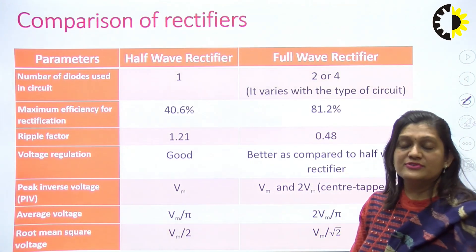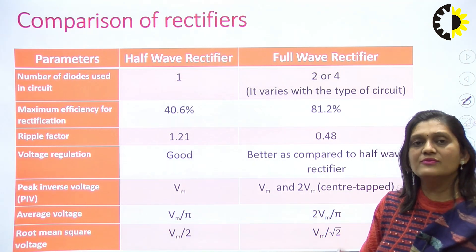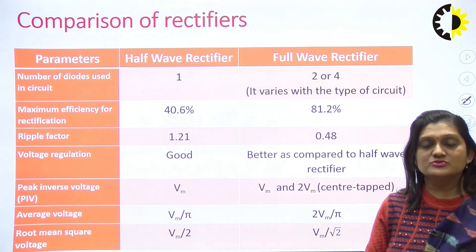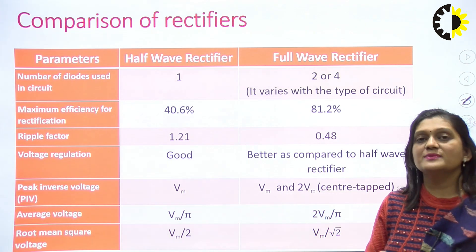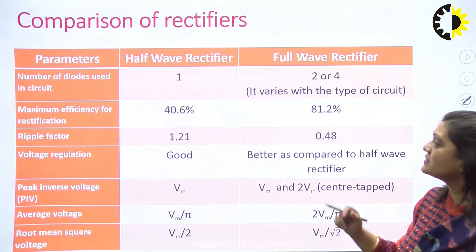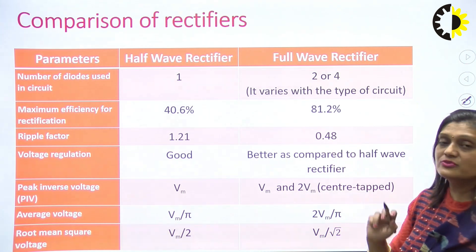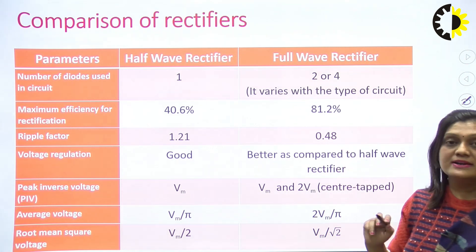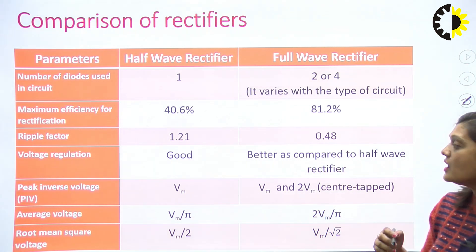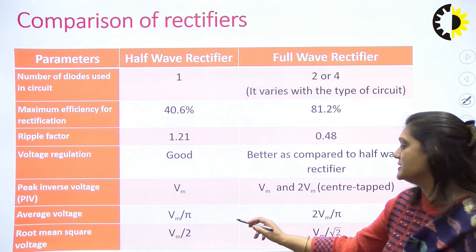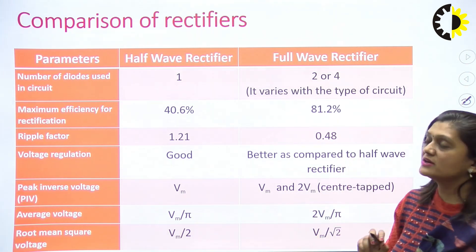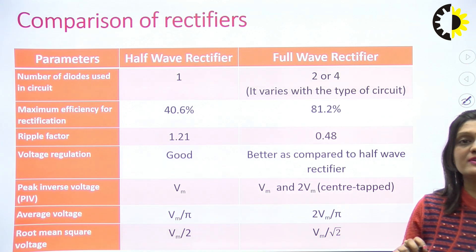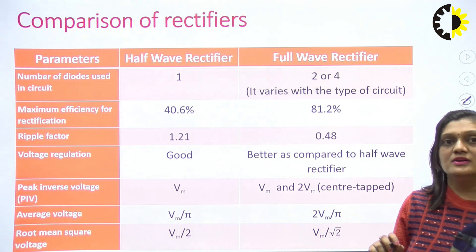To summarize the differences: half wave rectifier uses one diode; full wave rectifier uses two (center tap) or four (bridge) diodes. Ripple factor of full wave rectifier is 0.48 compared to 1.21 for half wave — meaning less AC component in the full wave output. Efficiency of full wave is 81.2% versus 40.6% for half wave, and VDC output is also higher. Thank you.